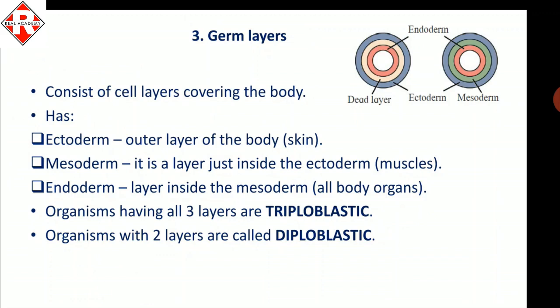The next criterion is germ layers. In multicellular animals, germ layers form during the initial period of embryonic development, and from those germ layers, different tissues are formed. In some animals there are only two germ layers — ectoderm and endoderm; in other animals there are three layers — ectoderm, mesoderm, and endoderm.